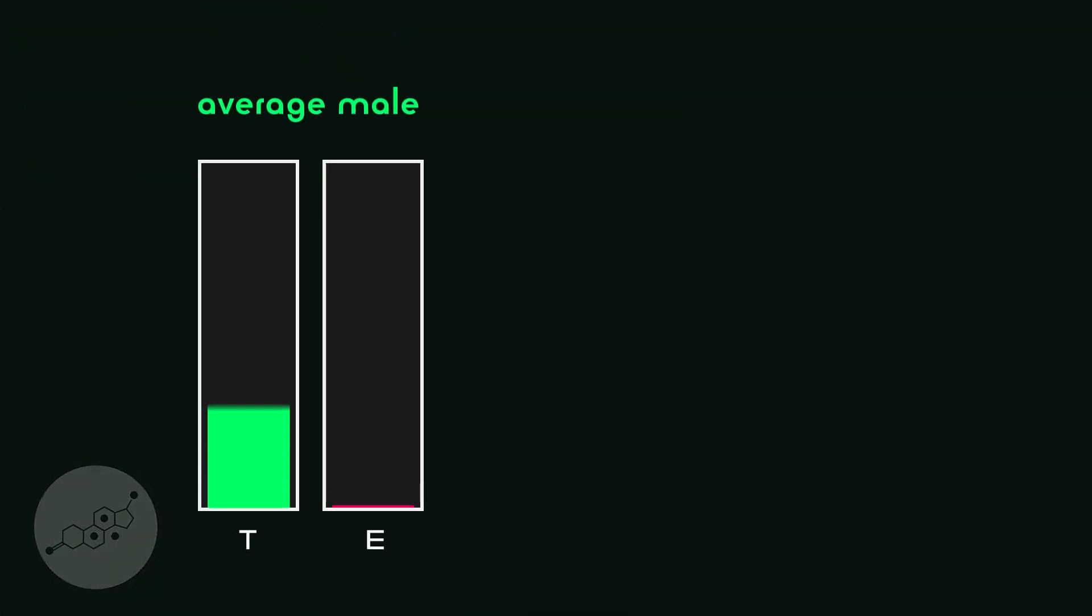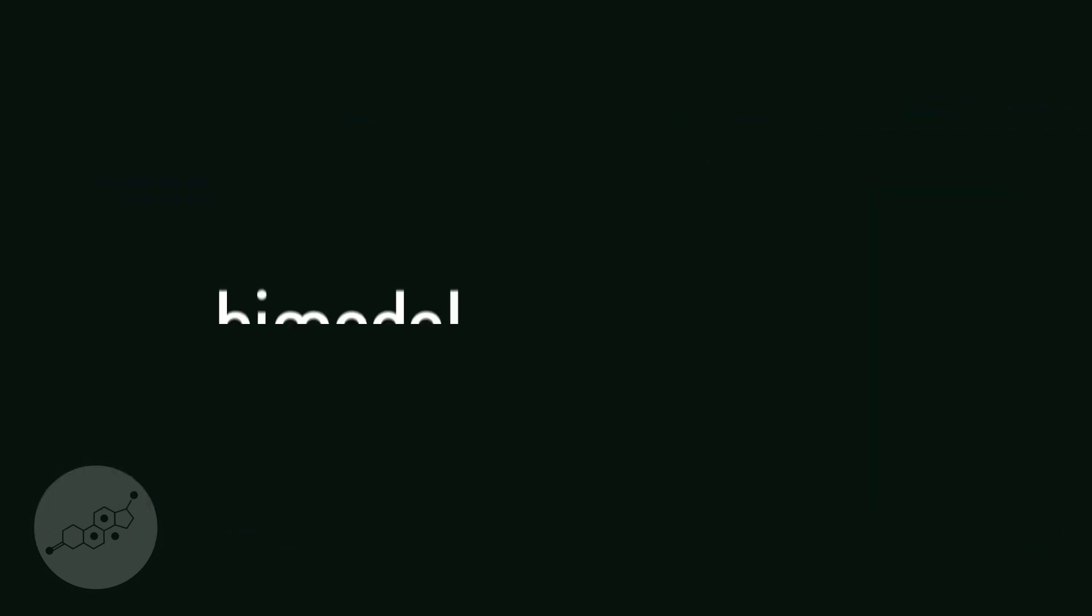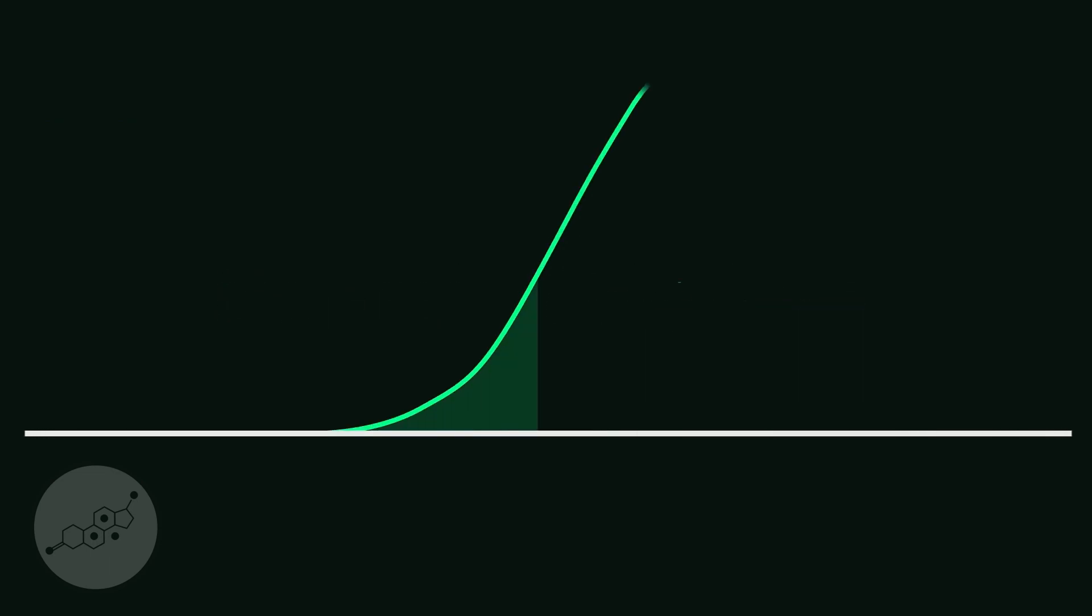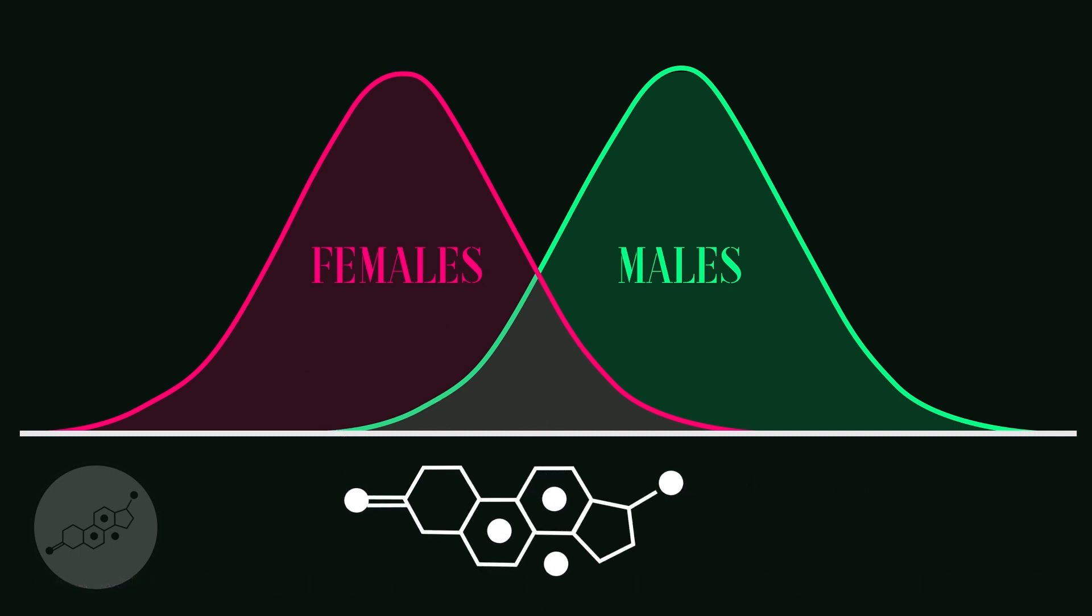While males and females are both exposed to testosterone and estrogen, these hormone levels, like differences in the brain, exist as bimodal distributions, an average for males and an average for females. Variants in hormones, even extreme variants, does not disprove the sex binary.